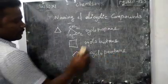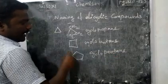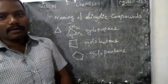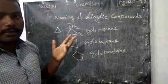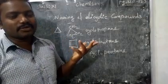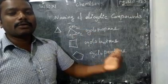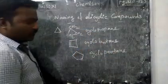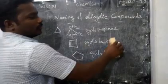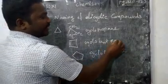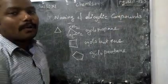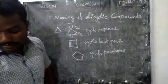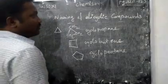Suppose we have one double bond in the ring. How do we name it? If there is only one double bond and no other substitution, you need not assign any number. Simply it becomes cyclopropene — the secondary suffix changes from '-ane' to '-ene' because of the double bond. So it is cyclopropene.